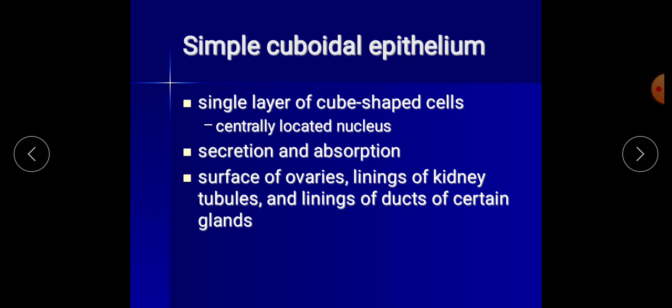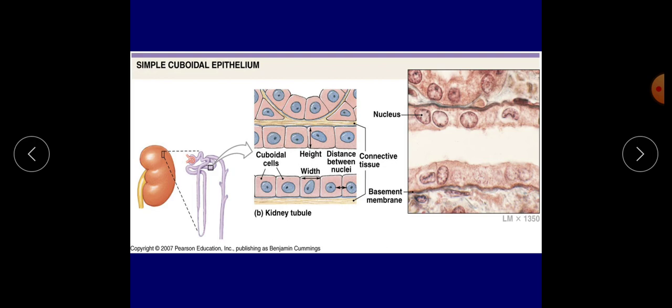Simple cuboidal epithelium is a single layer of cube-shaped cells with a centrally located nucleus. Its main function is secretion and absorption. Its location includes the surface of ovaries, lining of kidneys, tubules, and lining of ducts of certain glands — especially the PCT and DCT of the kidney. The cells have a nucleus and basement membrane, and the distance between nuclei is visible.